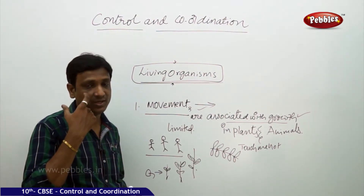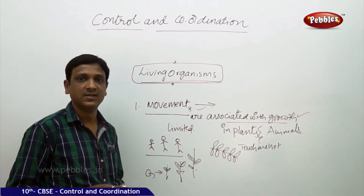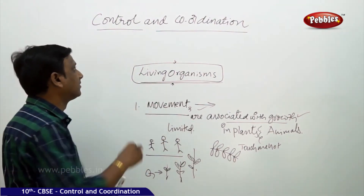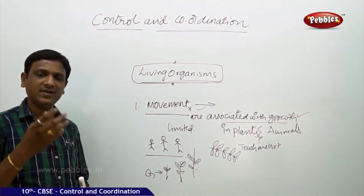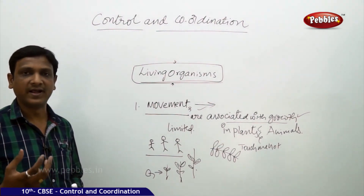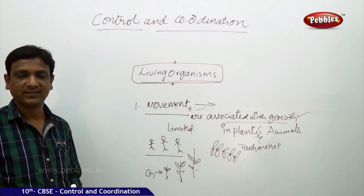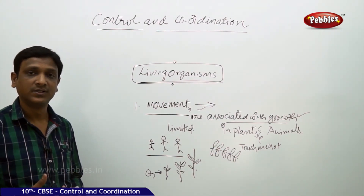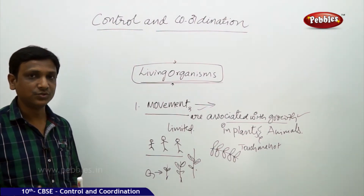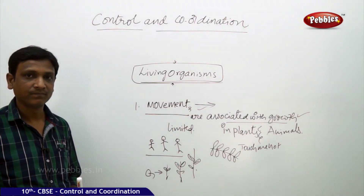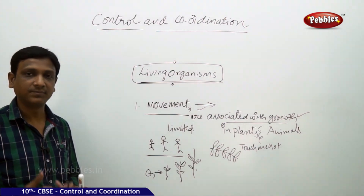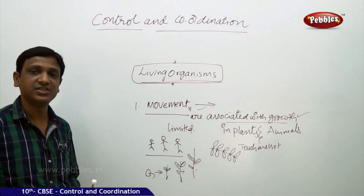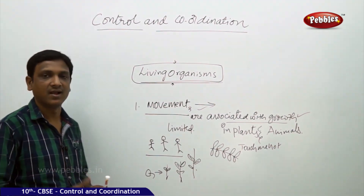Then why are movements produced, and how are movements produced in living organisms? This is what we are going to discuss in this chapter — Control and Coordination. Whether it is a plant or an animal, movements are there. We will discuss what causes these movements, whether they are useful, and whether they have any purpose or initiation.